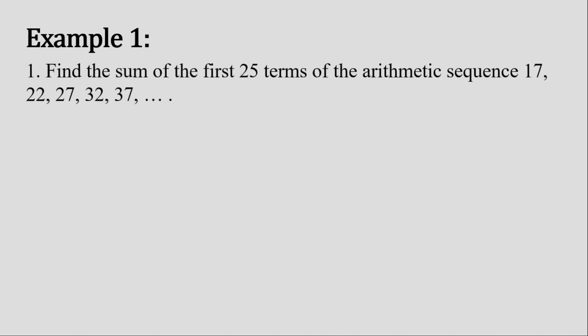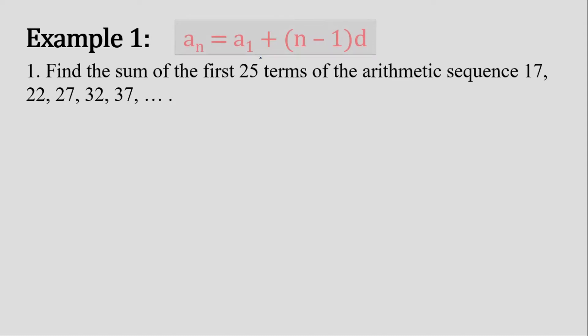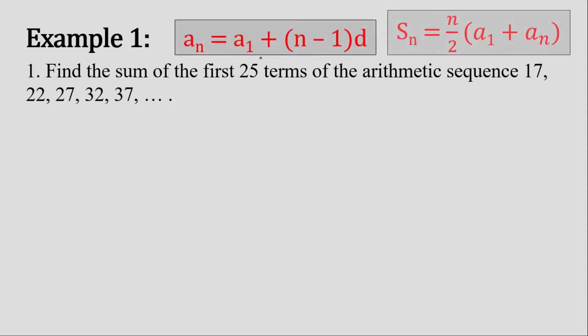They're asking us to find the sum of the first 25 terms. Since they're asking for the first 25 terms, our last term will be a sub 25. Now considering the formula for the arithmetic sequence and the formula for the sum of the first n terms of the arithmetic sequence.